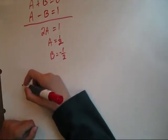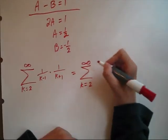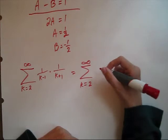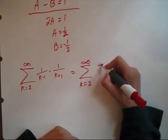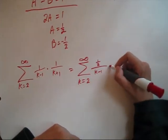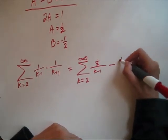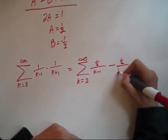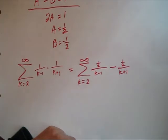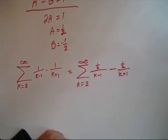So let's go back to our sum. We can rewrite it as 1 half over k minus 1 minus 1 half over k plus 1. And let's go ahead and just pull that 1 half out front.